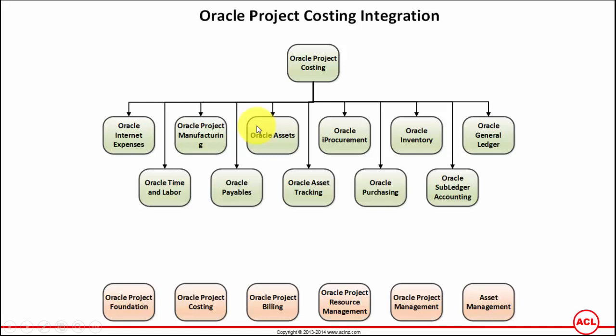That's where the integration comes when you are ready to transfer CIP assets to the Oracle Fixed Assets module. For Asset Tracking, items purchased from purchasing can be tracked via Oracle Asset Tracking until they land in fixed assets. Additionally, if you are retiring an asset, those assets can also be tracked in asset tracking.